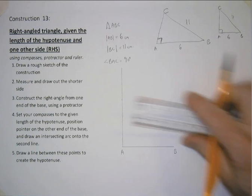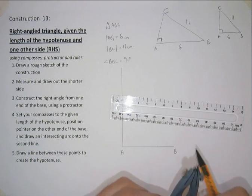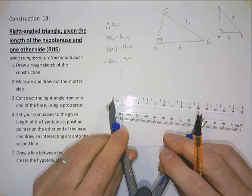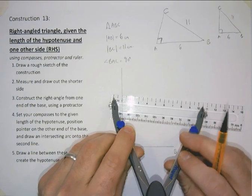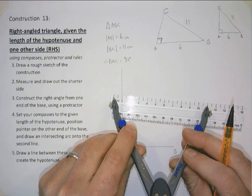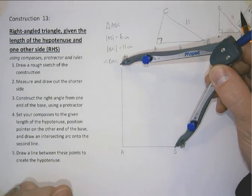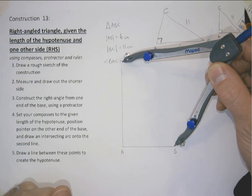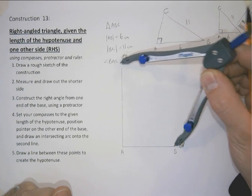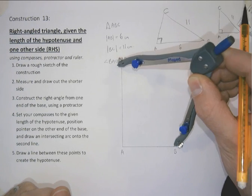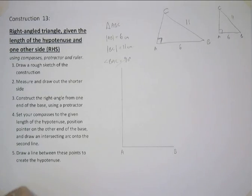Lastly we want to draw our hypotenuse. We know it's 11cm so we'll set up the compasses to 11cm. And we will position. In fact I haven't actually made that line long enough. So I'm going to have to do that again to extend that line out.